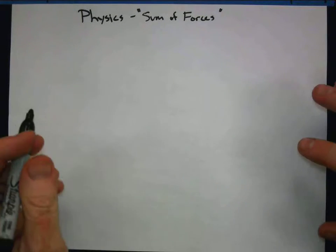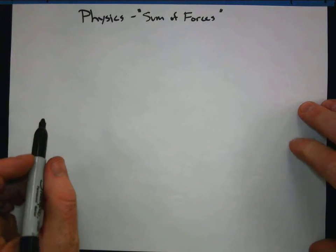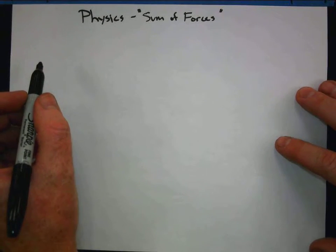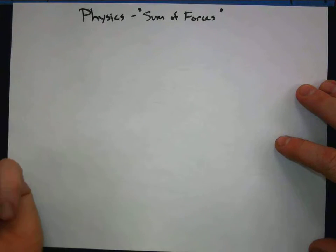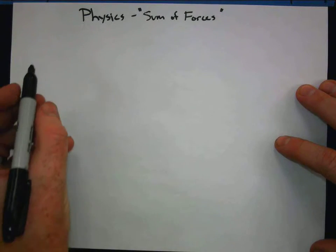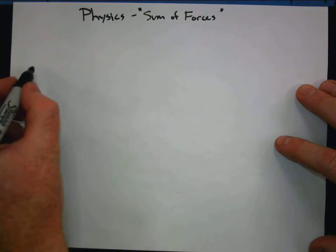All right, physics people, here we go. We're looking at an example where we have interacting objects, and so Newton's Third Law is definitely coming into play here. And we're going to take it a step further, and we're going to actually look at the sum of forces that are acting on at least one of these objects. Let's see how far we can get.